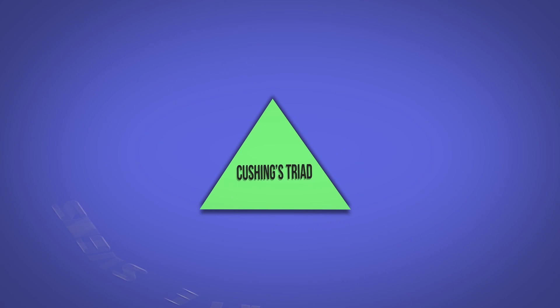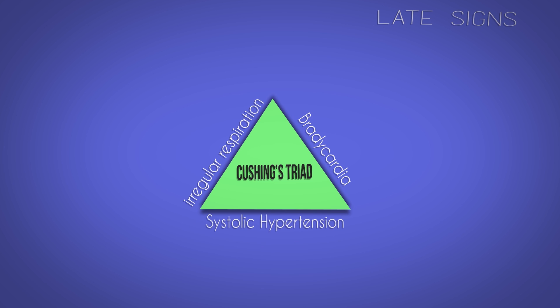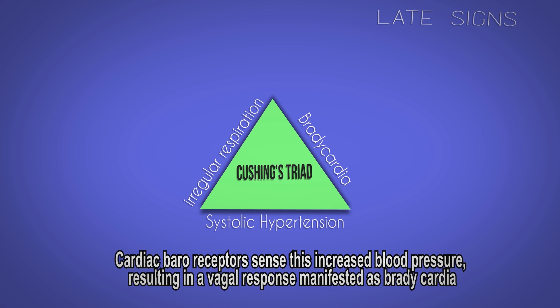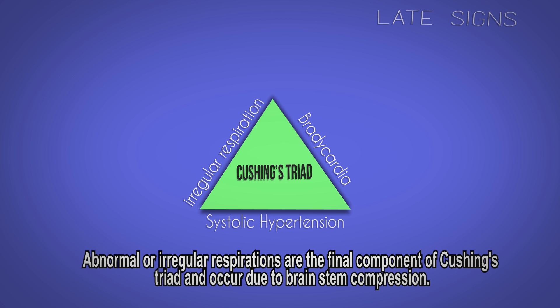Cushing's triad consists of irregular respiration, bradycardia, and systolic hypertension. It occurs when cerebral ischemia causes peripheral vasoconstriction, leading to increased systolic blood pressure to improve cerebral perfusion. Cardiac baroreceptors sense this increased blood pressure, resulting in a vagal response manifested as bradycardia. Abnormal or irregular respirations are the final component of Cushing's triad and occur due to brain stem compression.